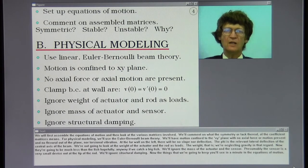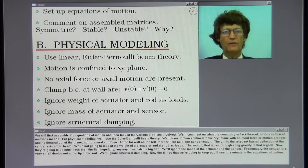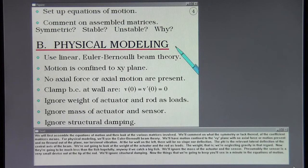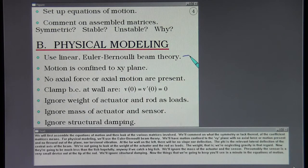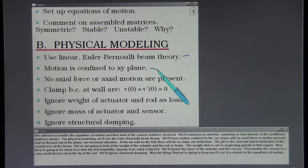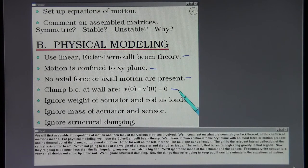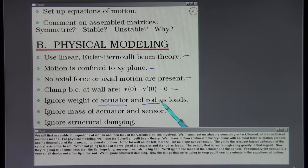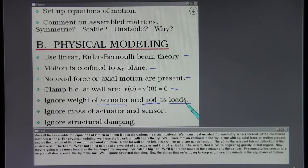We will first assemble the equations of motion, and then look at the various matrices involved. We'll comment on what the symmetry, or lack thereof, of the coefficient matrices means. For physical modeling, we'll use the Euler-Bernoulli beam theory. We'll have motion confined to the XY plane, with no axial force or motion present, and no flexure out of the plane, nor torsional vibration. At the far wall on the left, there will be no slope nor deflection. The V is the relevant lateral deflection of the central axis of the beam. We're not going to look at the weight of the actuator and the rod as loads—we're neglecting gravity in that regard. They're going to be much less than the fish, hopefully. Anyway, if we catch a big fish. We'll ignore the mass of the actuator and the structure.